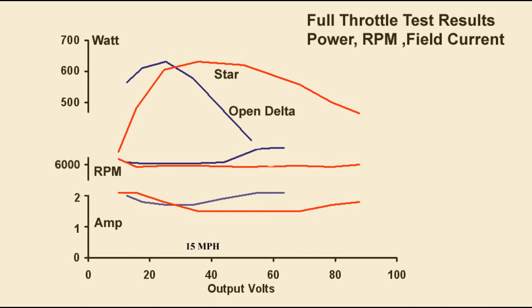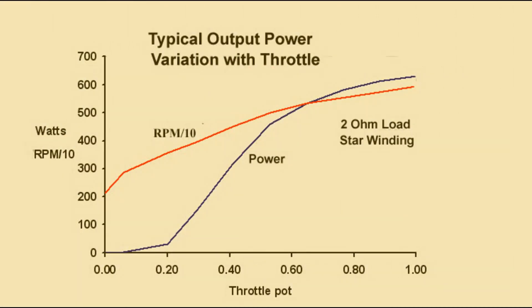A star delta relay will be added to combine good low speed acceleration with comfortable speed holding. Smooth power progression with throttle is observed in all conditions. This is one measured instance where power increases smoothly from about 3000 RPM.